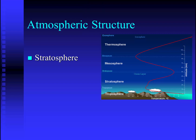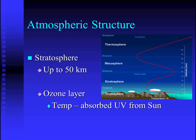Next from the troposphere is the stratosphere. This layer extends up to about 50 kilometers above the surface of the Earth. In the upper stratosphere is where we'll find the ozone layer. Ozone is that special molecule of oxygen with three oxygen atoms. Ozone is particularly strong at absorbing ultraviolet energy from the Sun. The temperature increases due to the ultraviolet light being converted to heat energy.